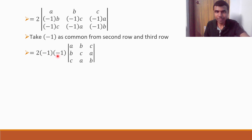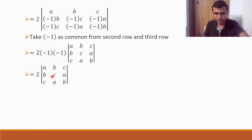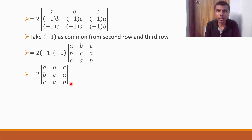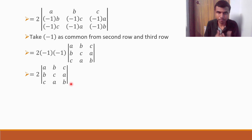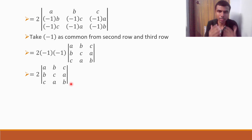Minus 1 times minus 1 is plus 1, so I get 2 times the determinant of A, B, C, B, C, A, C, A, B. This is exactly what they had asked, and this is what we got. I tried my best to go logically so that you won't have to mug up this solution — understanding what operations to apply and how things work.